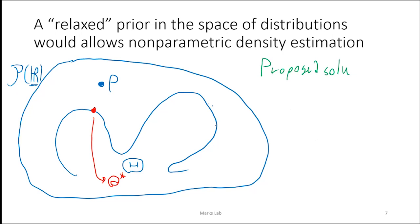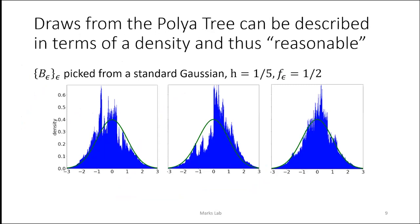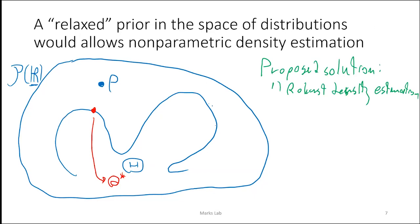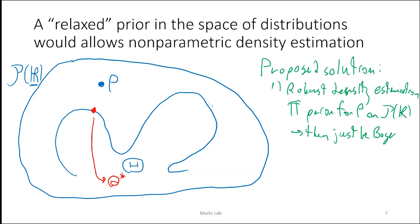So here is the key idea, described in two steps. Step one: robust density estimation. I'm going to take a big pi as a prior for P on the space of probability distributions on the reals, then just take the posterior. If pi is robust and tractable, then we're done.